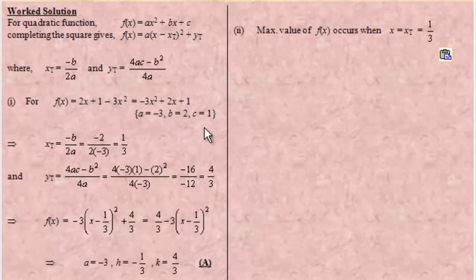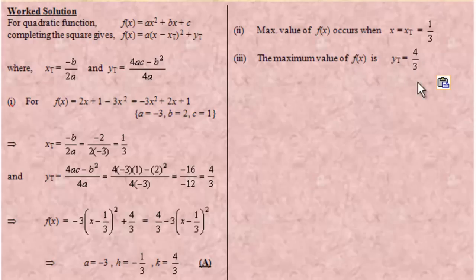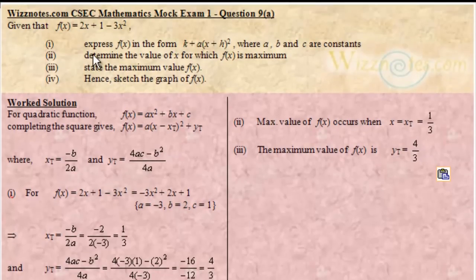That is why we like to do it this way, because we work out our xt value from the beginning. So the maximum value of f of x occurs when x equals xt, and xt is 1 third. And our maximum value is going to be the yt value that we worked out — the yt value is going to be the maximum value of f of x. The maximum value of f of x is yt, which is 4 over 3.